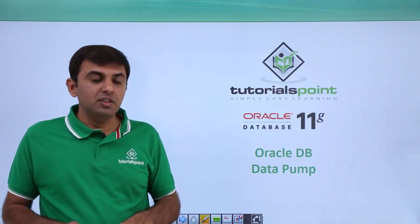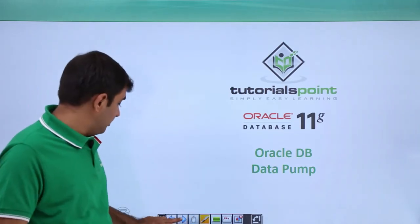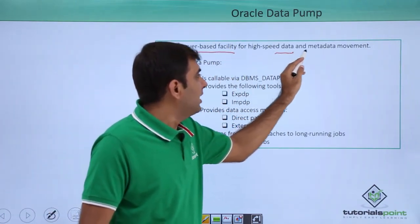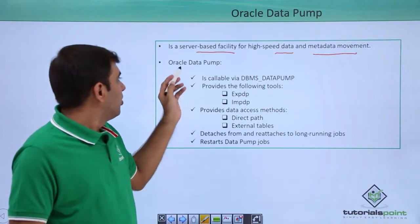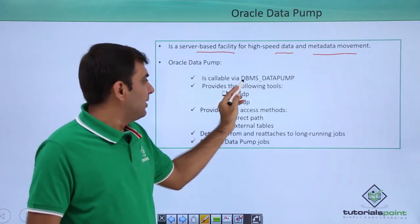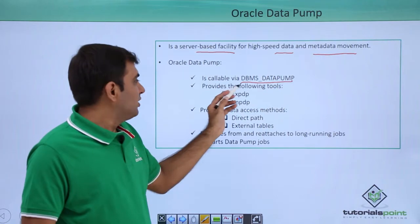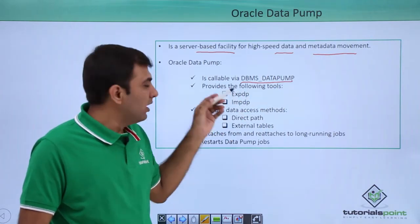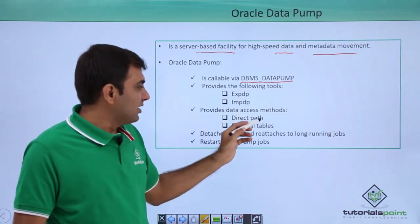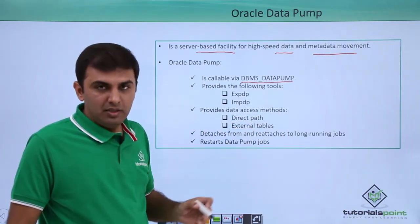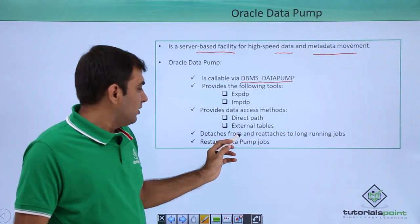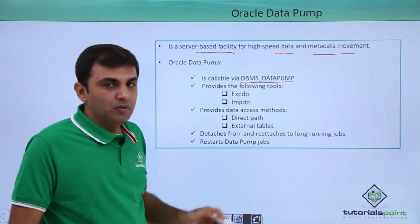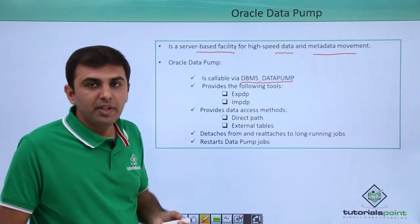Hello friends. In this session we are going to discuss about Oracle Data Pump. It is a server-based facility for high-speed data and metadata movement. Oracle Data Pump is callable via the dbms_data_pump package and provides the following tools: expdp and impdp for importing and exporting data, data access methods including direct path and external tables, the ability to detach from and reattach to long-running jobs, and the ability to restart a Data Pump job.